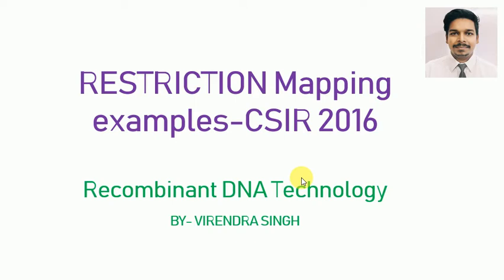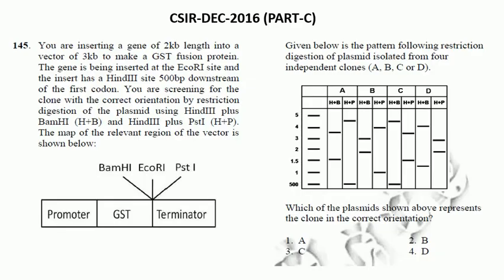So let's see what are those examples and how to solve them easily. This question is asked in the CSIR examination December 2016. The question is that you are inserting a gene of 2KB length into a 3KB vector.